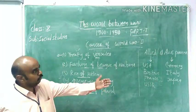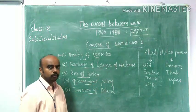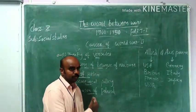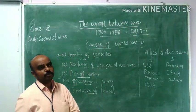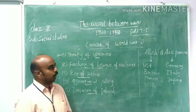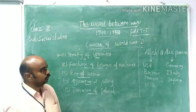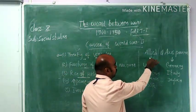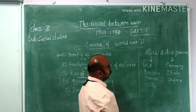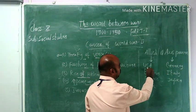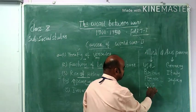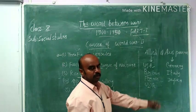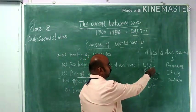Just like in World War I, where Europe was divided into the Triple Alliance and Triple Entente, during World War II the world was divided into two parts: the Allied group and the Axis powers. The Allied group consisted of USA, Britain, France, and USSR. The Axis powers were Germany, Italy, and Japan.